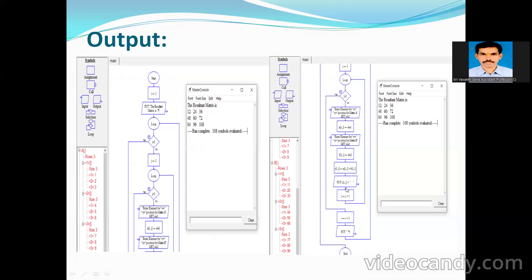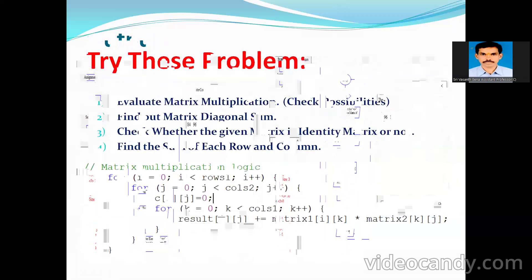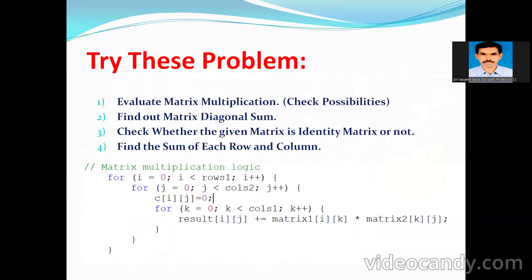This is the addition of two matrices. In place of plus if you write minus, it will give the result of subtraction of the two matrices. You can also find matrix multiplication, but before doing so you need to check whether matrix multiplication is possible based on the order of the matrices.